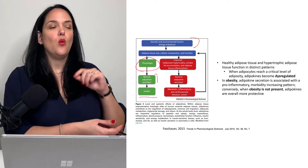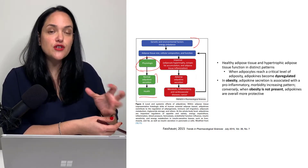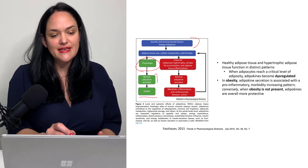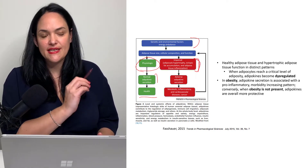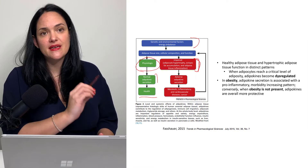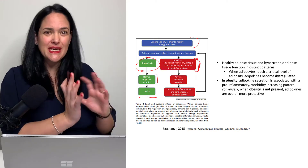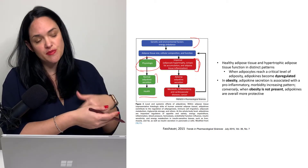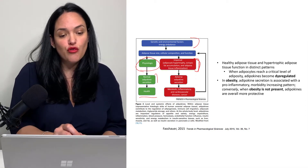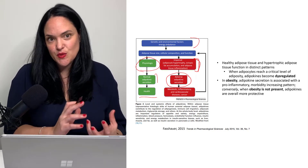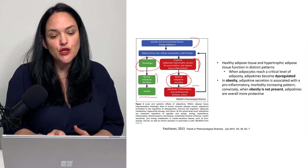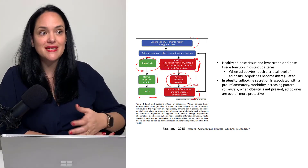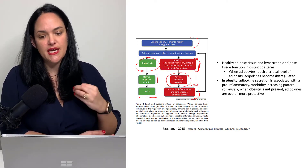However, when our fat cells get very large and adipose tissue is enlarged, we tend to have more dysregulated adipokine secretion. This dysregulation — and I say dysregulated because it depends on which factor we're talking about; some secretion patterns go up, some go down — but overall that change in adipokine secretion contributes to the metabolic impairments and the comorbidities we see in obesity.